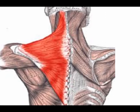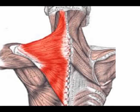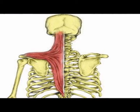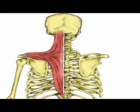The insertion of the lower part of the trapezius muscle is the tubercles of the apex of the scapular spine. The concentric actions of the upper part of the trapezius muscle are elevation of the scapula and upward rotation of the scapula.